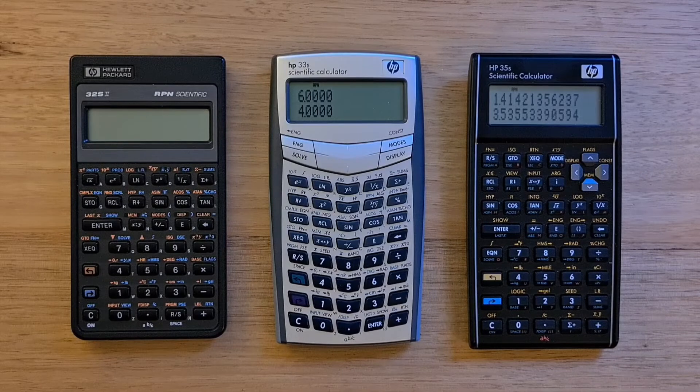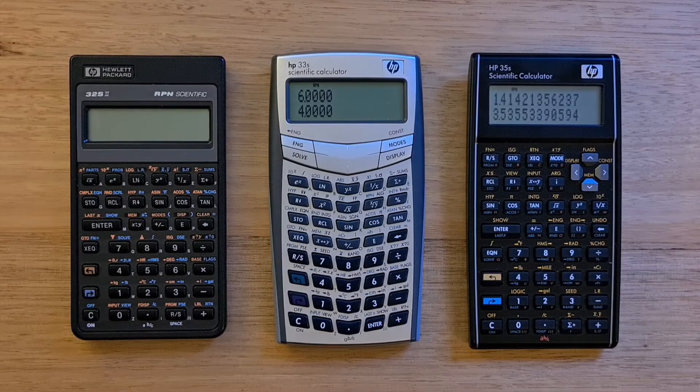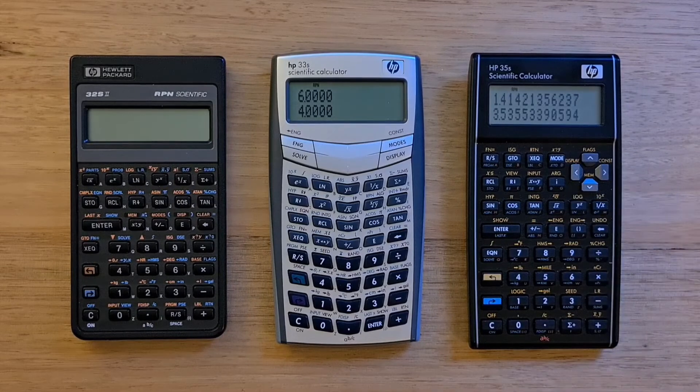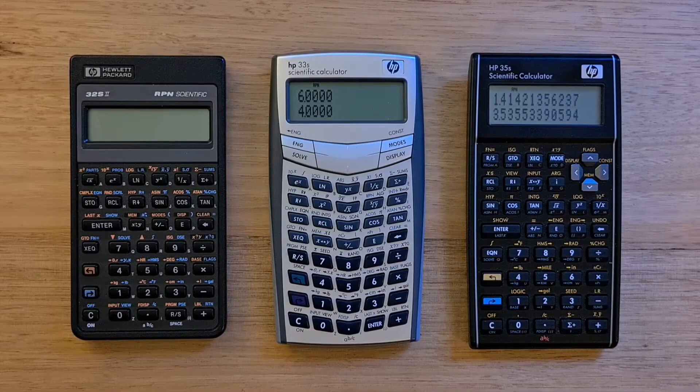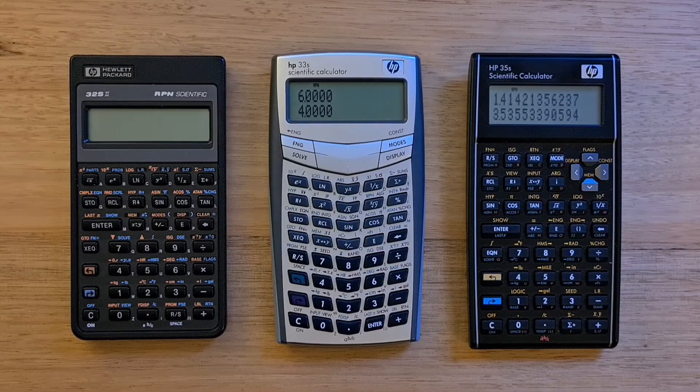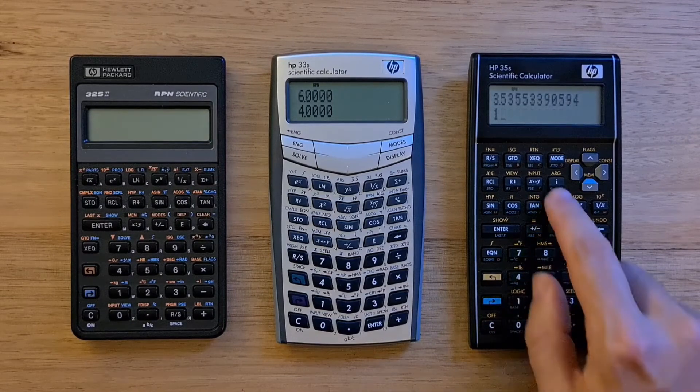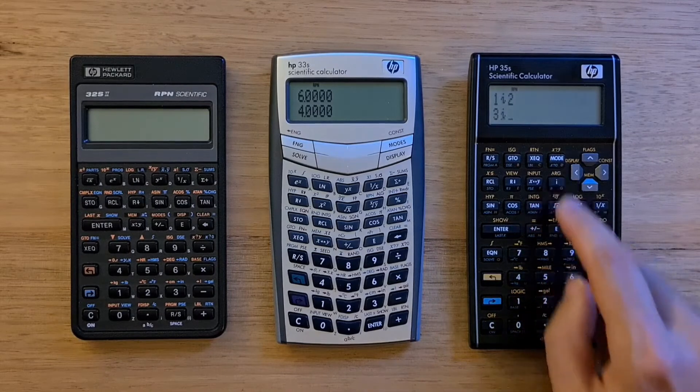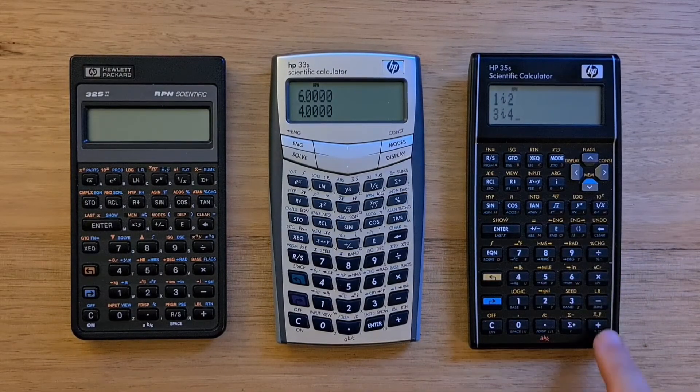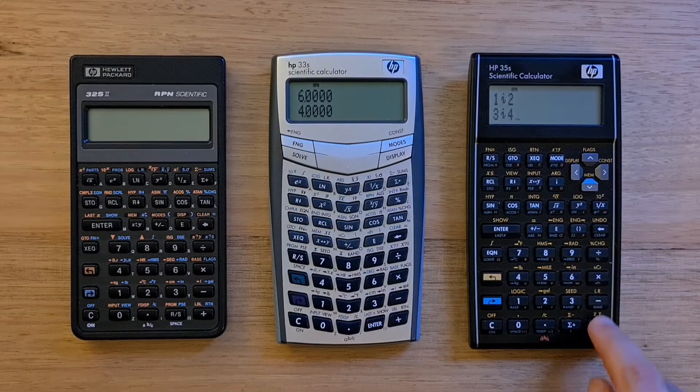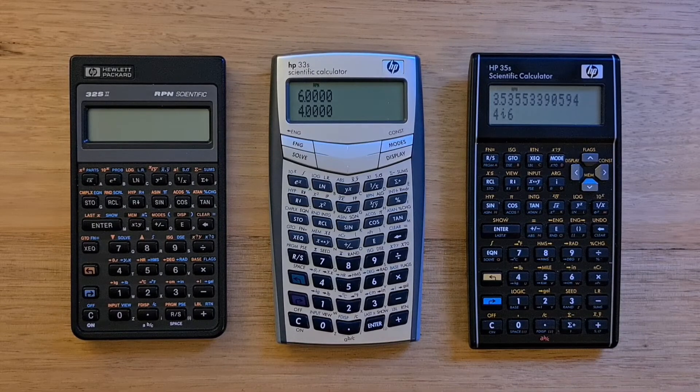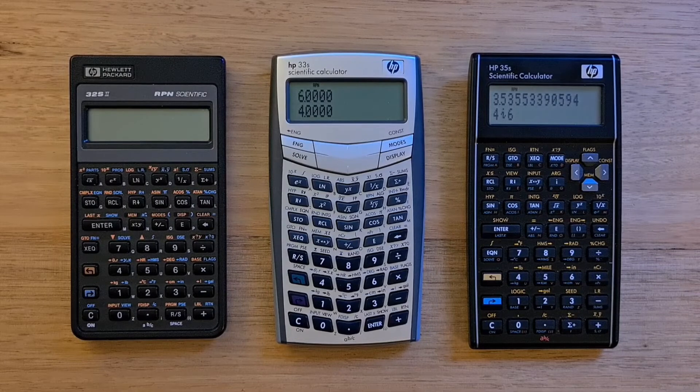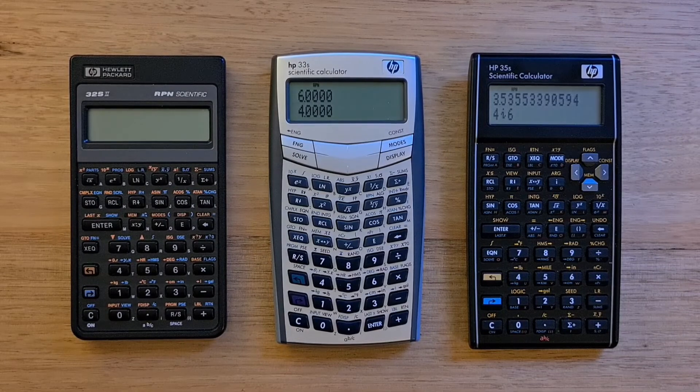But the same operation on the 35S is a lot easier. Here we'll use the i key to enter complex numbers and they get put into a single register. I'll type 1i2 and then enter and then 3i4. To add those numbers, I can just hit plus.